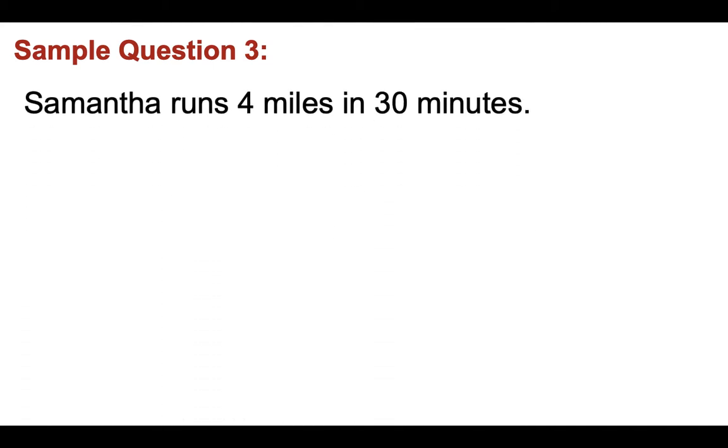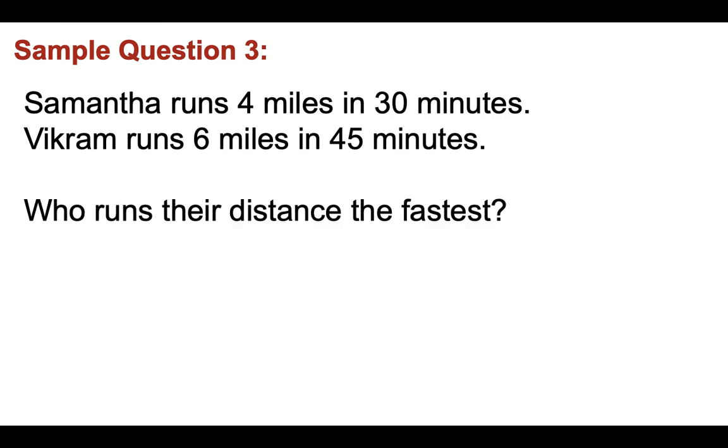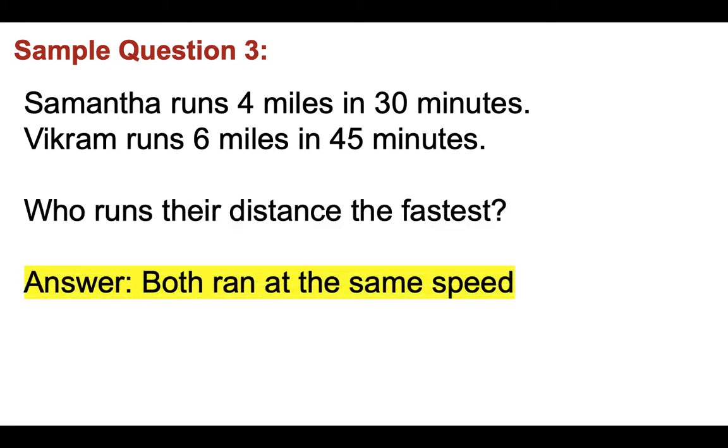Sample question three. Samantha runs 4 miles in 30 minutes and Vikram runs 6 miles in 45 minutes. Who runs their distance the fastest? Well, the answer is they both ran at the same speed. So 4 divided by 0.5, which is half the hour equals 8. And 6 divided by 0.75, which is three quarters of an hour, 45 minutes, again equals 8. So they both ran at the same speed.